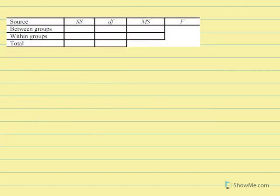In our source table, SS within equals 105, degrees of freedom within equals 21, and MS within equals 5. SS total equals 177 and DF total equals 23. What's missing are the statistics for between groups as well as our F ratio.